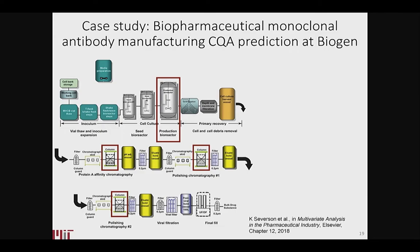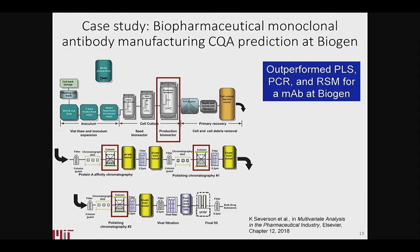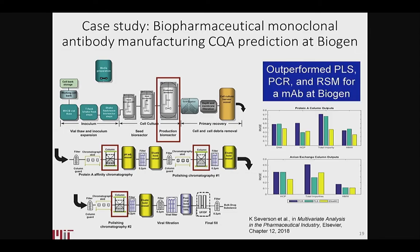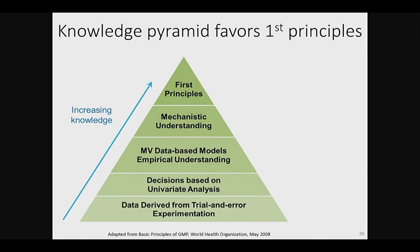We were actually motivated by a Biogen application with real data from a couple of different manufacturing sites. We applied this method and were able to outperform all the methods used at Biogen, which has a very good statistics group. It turned out the right approach was a machine learning algorithm for small quantities of data — as opposed to big data, which is actually somewhat ironically easier.